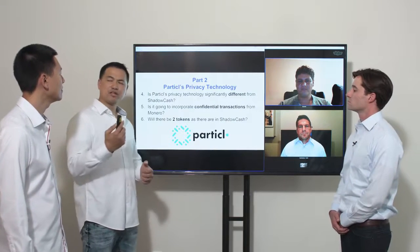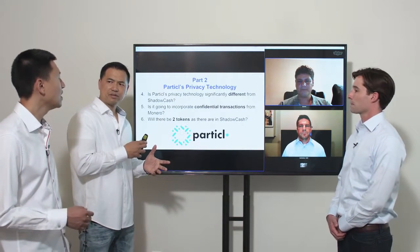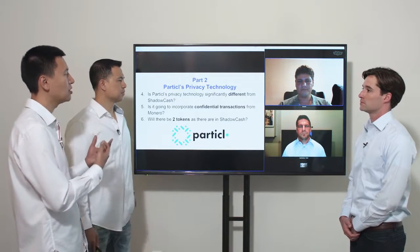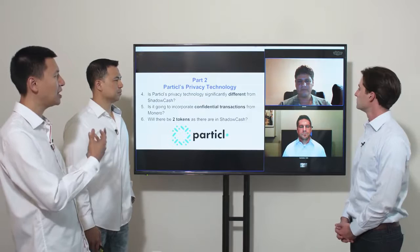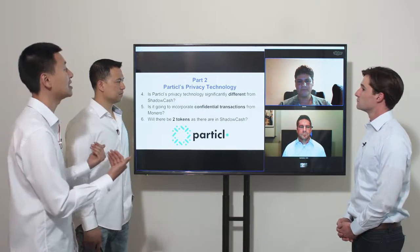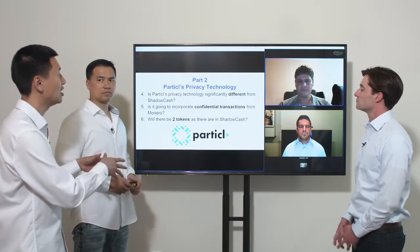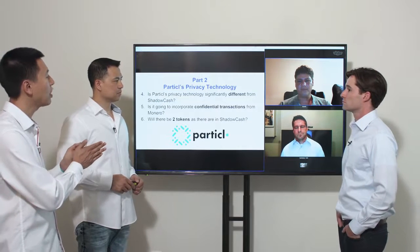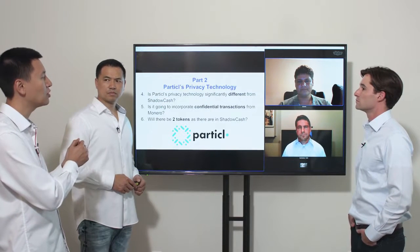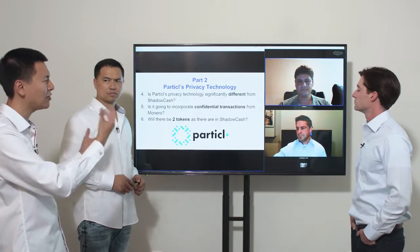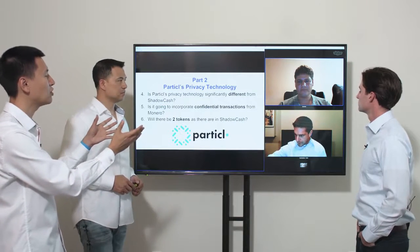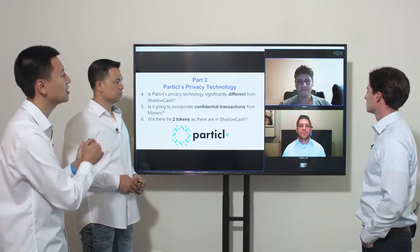Yes, we're still going to have a private balance and a public balance with the same sort of mechanism. The ShadowCache was always traded as SDC, the public balance. Is it possible to trade the private balance? The primary token question — is it going to be the public or private balance? Because the whole point of Particle is the privacy features, so why have two tokens? Why not just make it default like Monero?